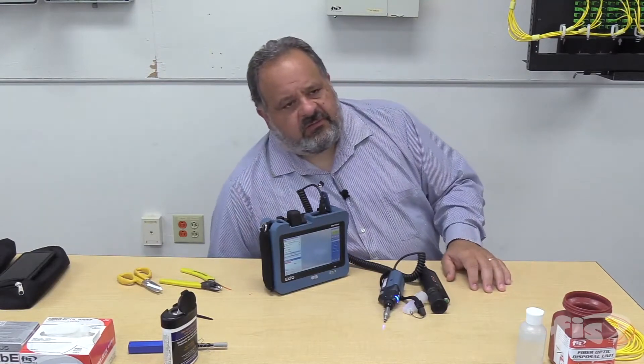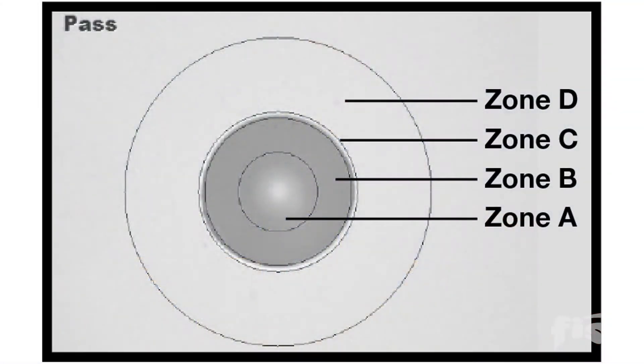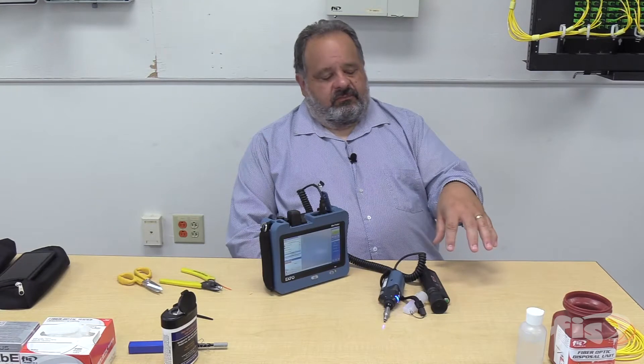For years — for decades — end-face analysis was always left to the person viewing the connector. What might be a blemish or a scratch to some people might not be to others. A few years ago, a standard was set: IEC 61300-3-35. The IEC standard defines four areas of a connector — zones A, B, C, and D. Zone A is the core, B is the cladding, C is the epoxy ring, and D is the contact zone, which is your ferrule.